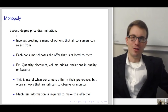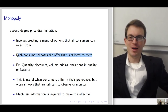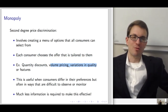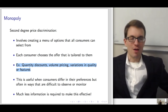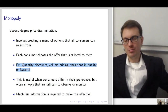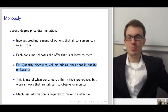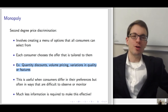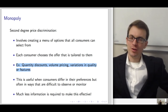Second-degree price discrimination involves setting a menu of options that consumers are free to choose from, with the hope that everybody chooses the offer intended for them. Examples include quantity discounts or volume pricing, or variations in quality or features. This is useful when consumers differ in their preferences in ways that are difficult to observe or monitor. Everybody has the ability to buy any package — people just buy whatever is best for them.